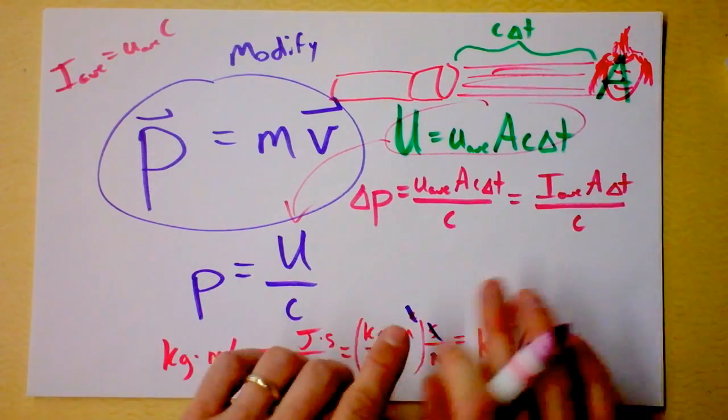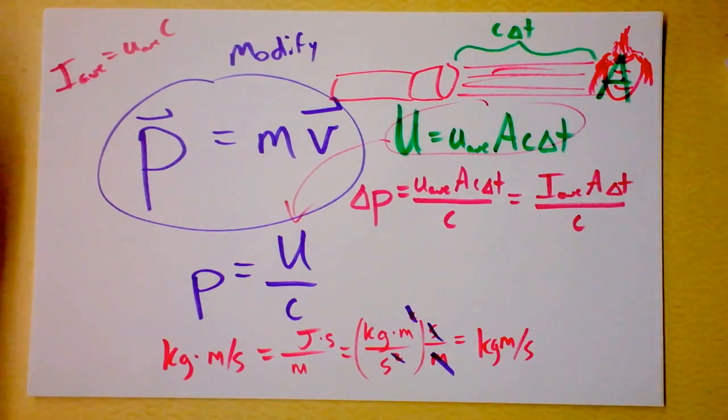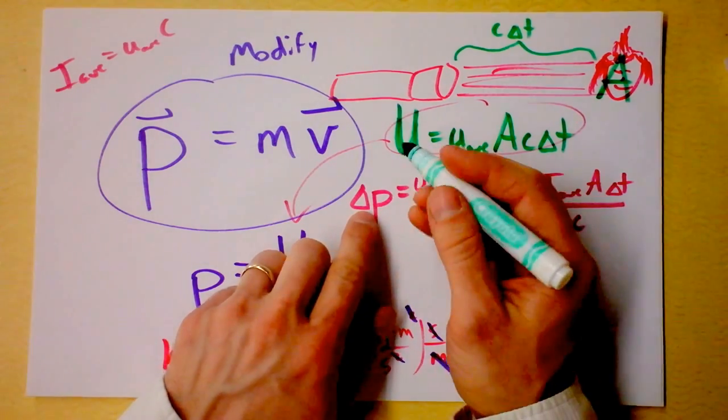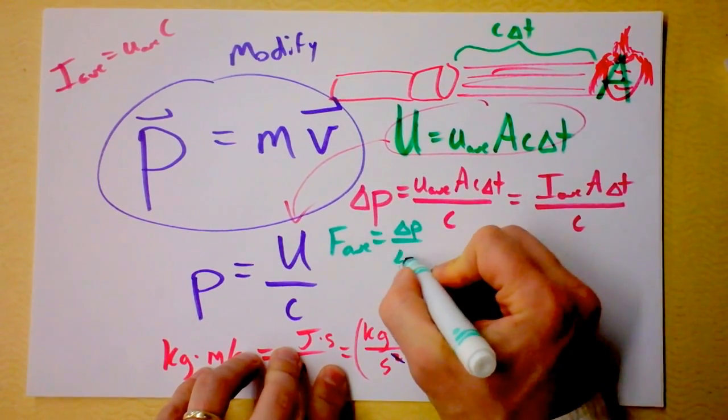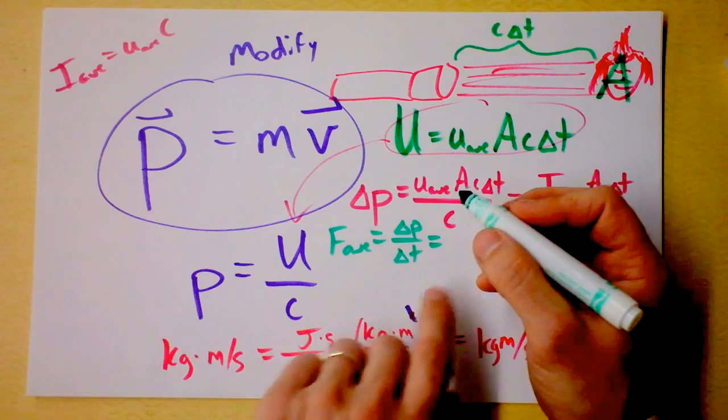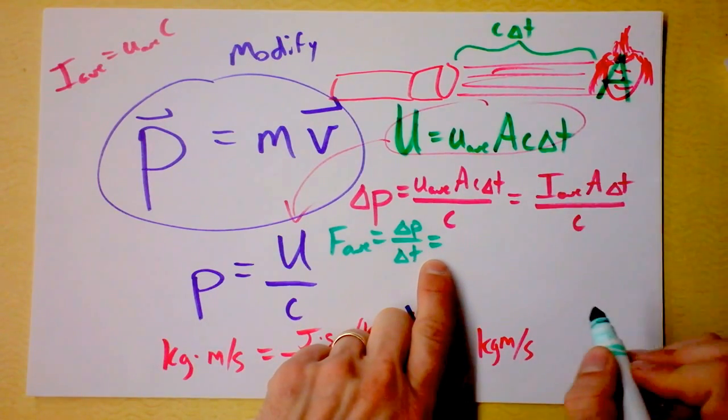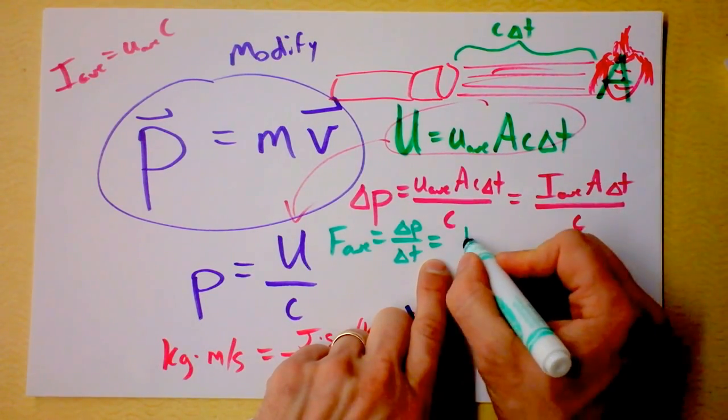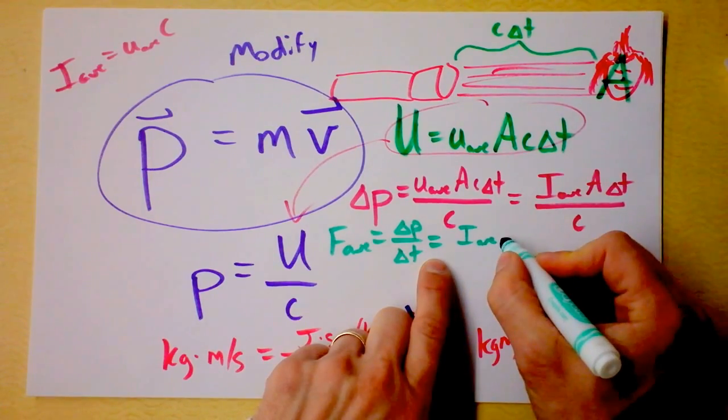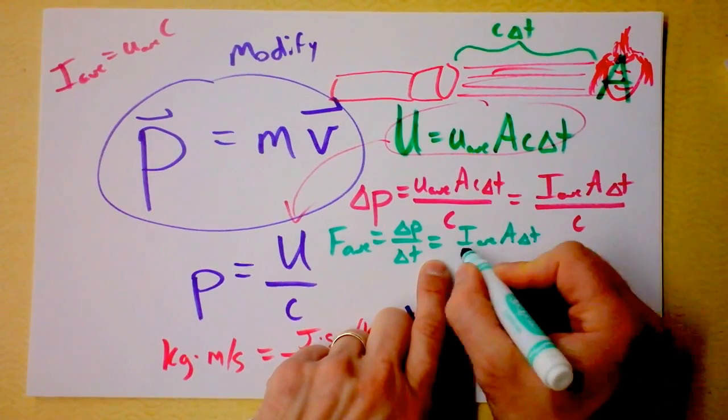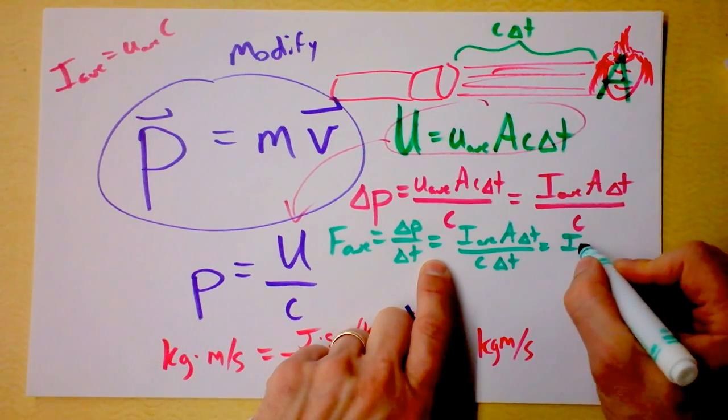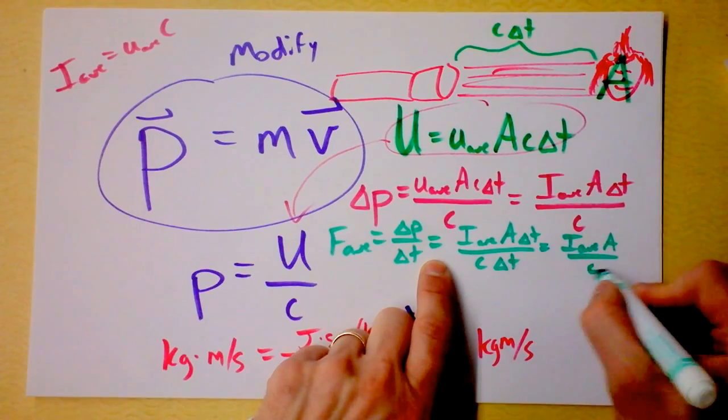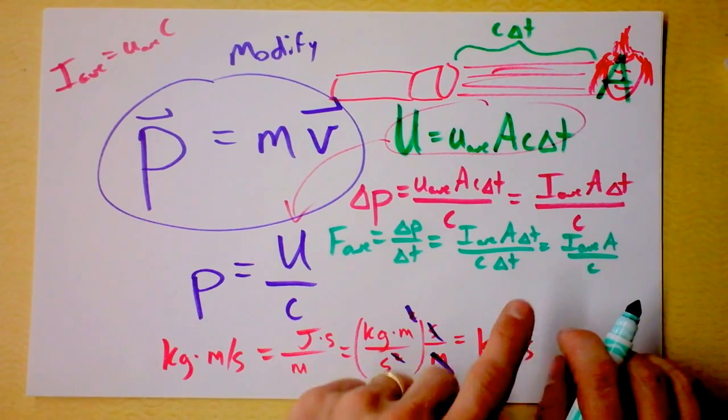Do you remember how force is related to change in momentum or impulse? Average force is change in momentum divided by change in time. Here we go. I'm supposed to take this and divide it by time? That's obviously average intensity times area times time divided by c and time. And now I'll cancel out some times. This is average intensity times area divided by the speed of light.